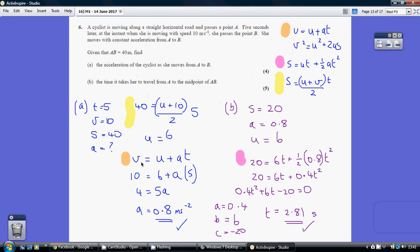Then I can move over and use V equals U plus AT, allowing me to work out that my acceleration is 0.8.